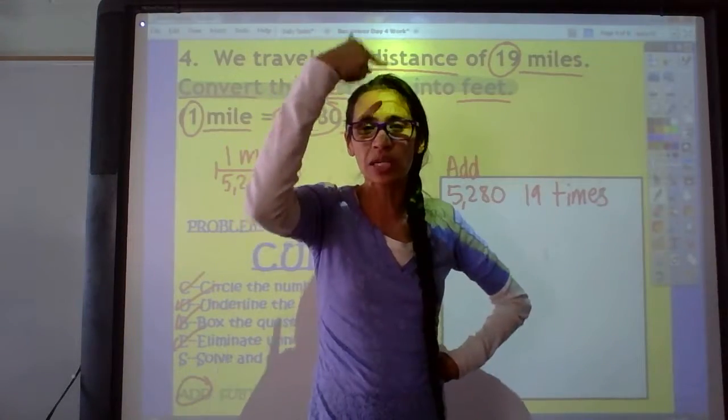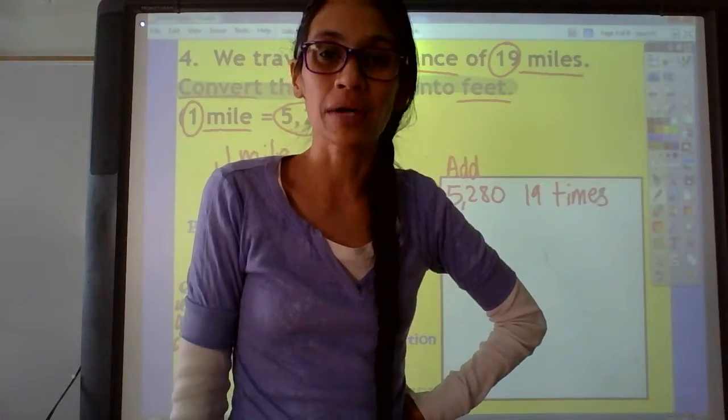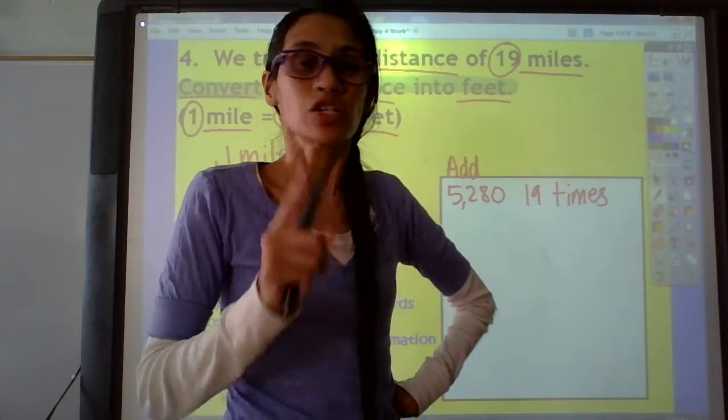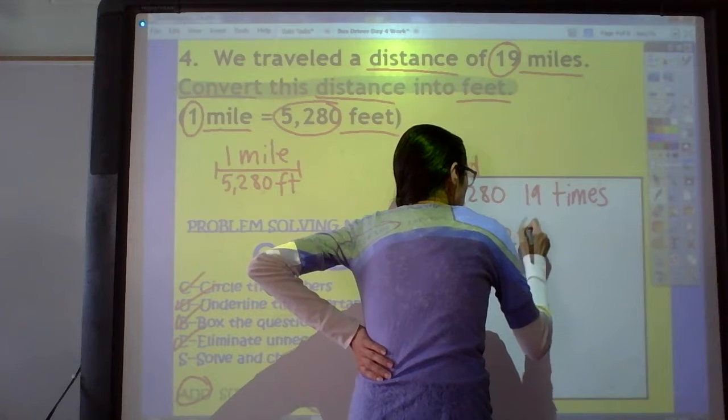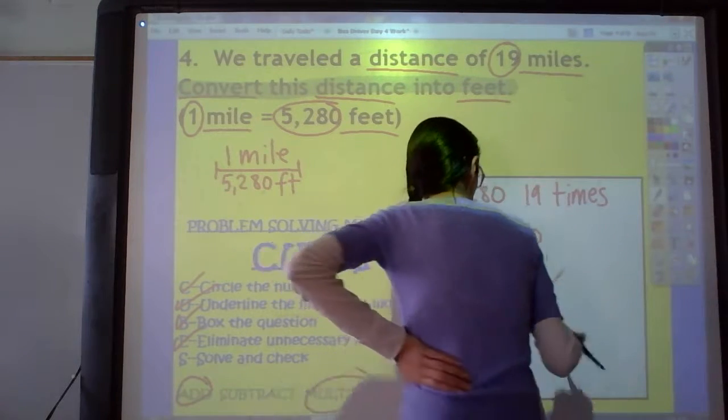My brain tells me, it's Alana's brain. And Alana's brain says to multiply because that is the more efficient, quicker way to solve the problem. So, do you want to help me multiply 5,280 times 19?